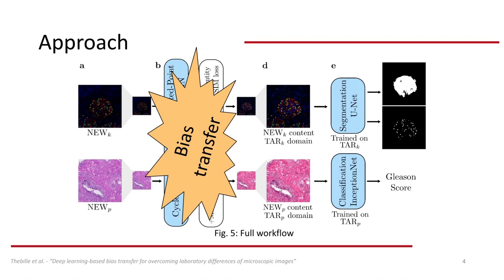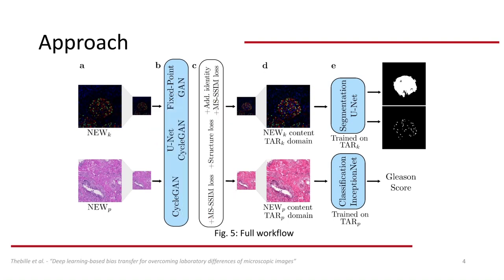This is an overview of our workflow. In A you can see the images from the new domains, which are downsampled, transformed, and then upsampled again, before they are fed to the segmentation or classification networks. The segmentation network predicts two masks: one for the glomeruli, which are the filtering units of the kidney, and one for the glomeruli's podocytes, which are indicators for the healthiness of the kidney. The classification network predicts one Gleason score per image, which is a common score for prostate cancer. For the actual biostransform, we tried three different network types: CycleGAN, UnitCycleGAN, and Fixed Point GAN, combined with three additional losses.